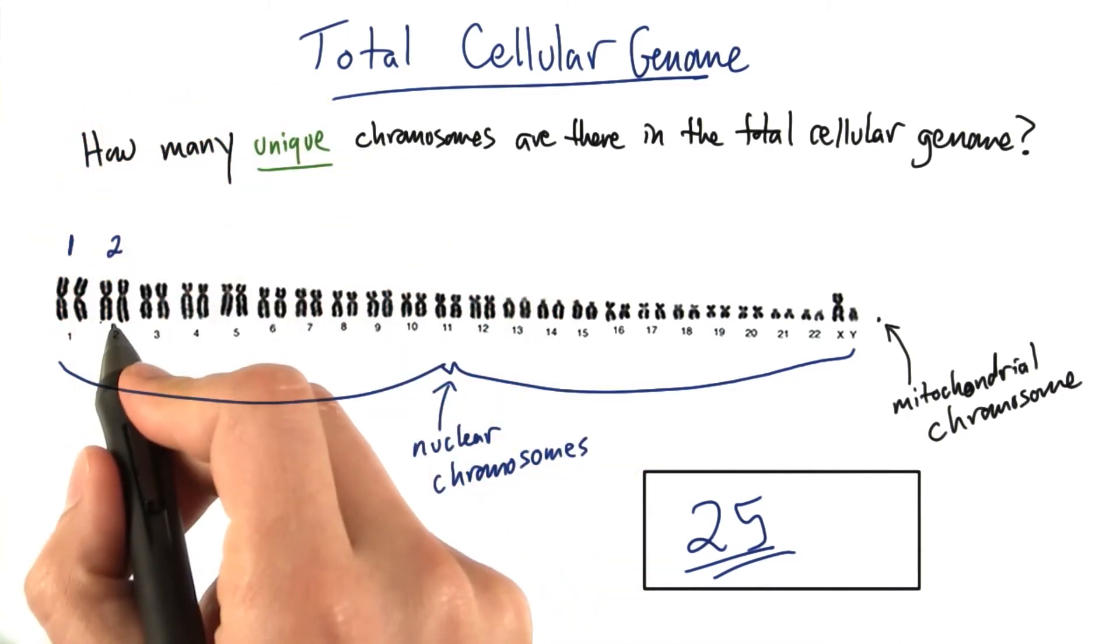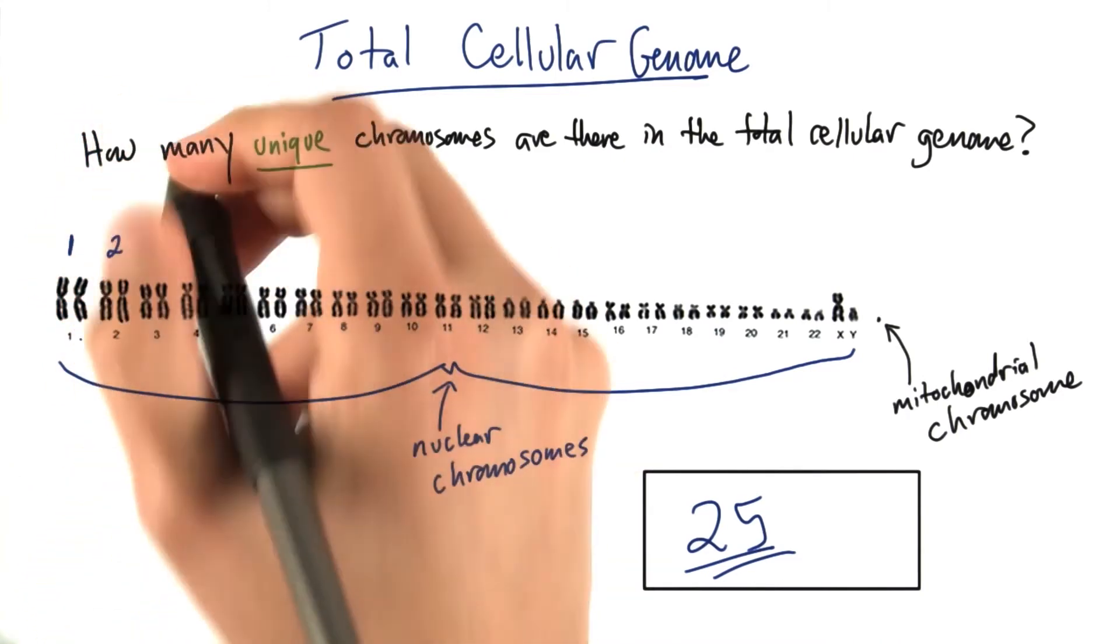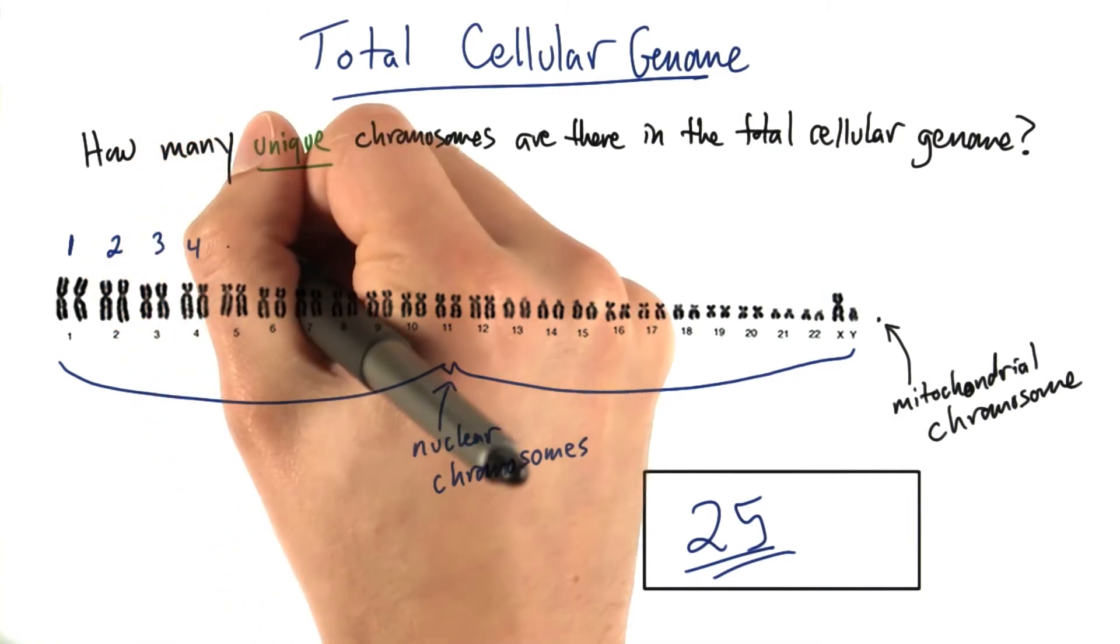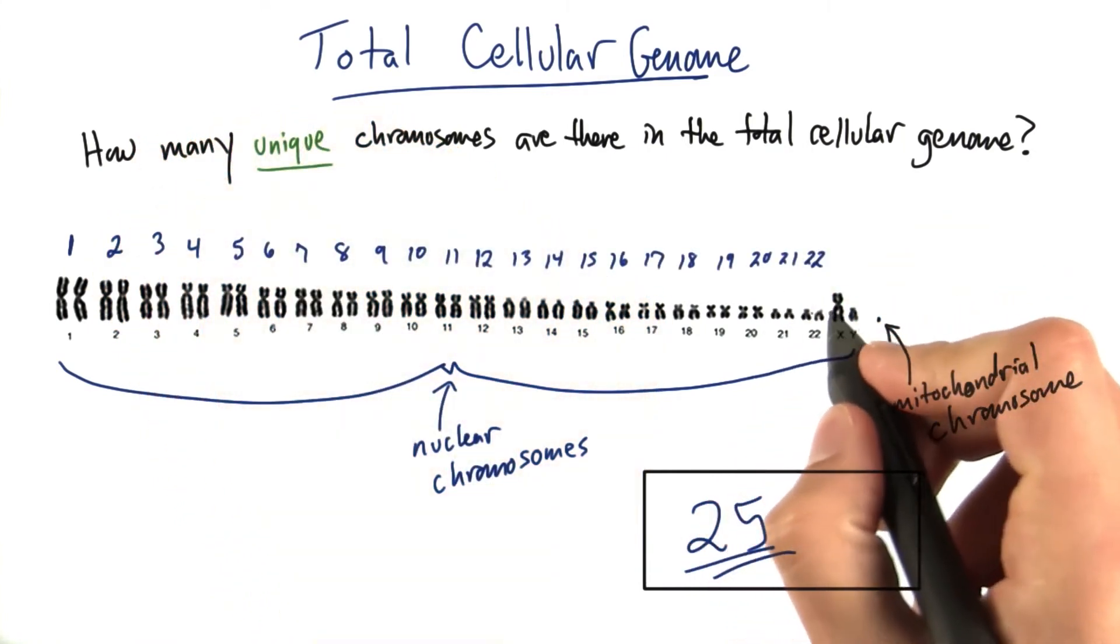The same thing for the second pair. We're not going to count the copy. This is 2, 3, 4, all the way till we get to 20, 21, 22.